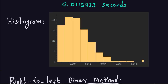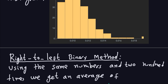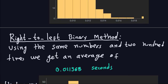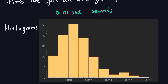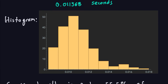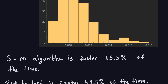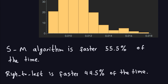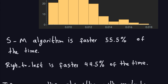So on average, the square-and-multiply algorithm is a little bit better than the right-to-left method, at least with this implementation and these numbers. Out of 200 runs, the square-and-multiply algorithm is faster 55.5% of the time and the right-to-left method is faster 44.5% of the time. This probably depends on memory usage, many other factors with the computer, so on average it looks like square-and-multiply is slightly faster.